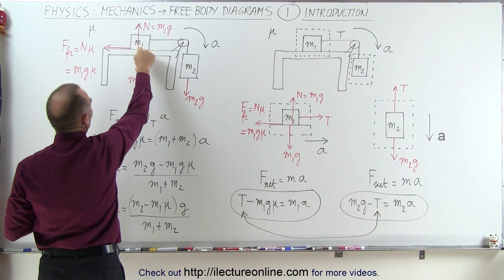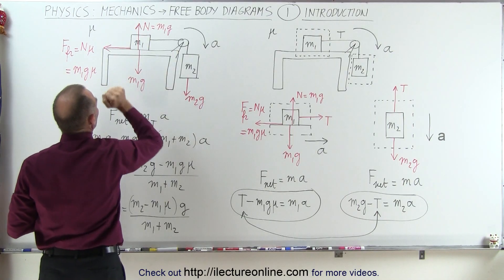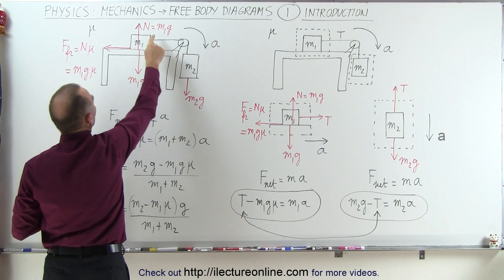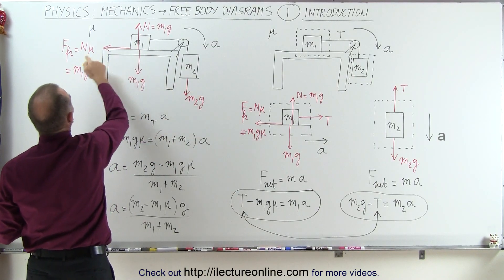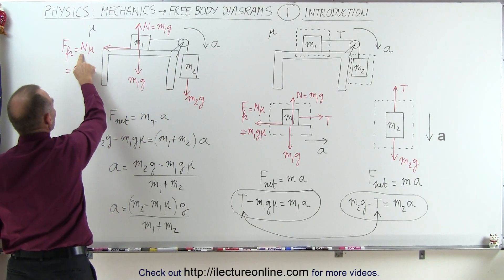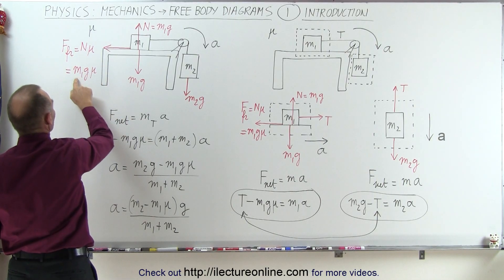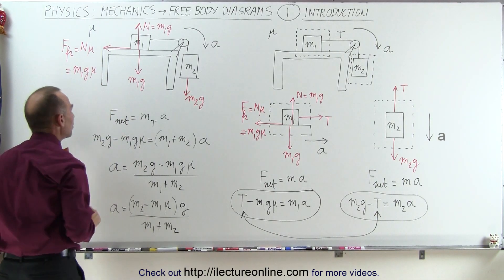Then here, because it's on the tabletop, we have the normal force pushing back. That's Newton's third law, equal in magnitude, opposite direction. And then we have a friction force which by definition is the normal force times mu, and the normal force is m1g, so this will be m1g mu.